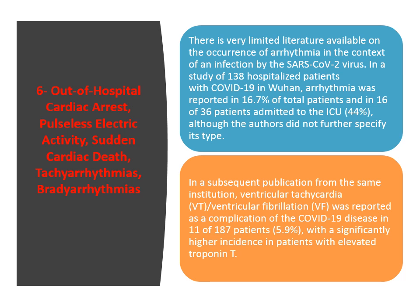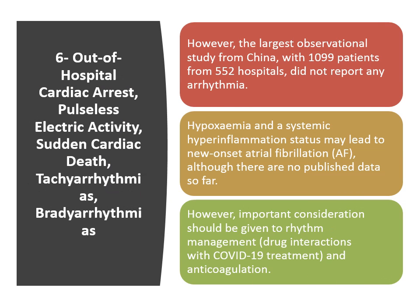VT or VF occurred with a significantly higher incidence in patients with elevated cardiac troponin T. However, the largest observational study from China — including more than 1,000 patients from about 550 hospitals — did not report any arrhythmia. Hypoxemia and systemic hyperinflammation may lead to new-onset atrial fibrillation. Important consideration should be given to arrhythmia management, including drug interactions with COVID-19 treatment and anticoagulation.